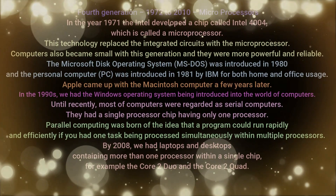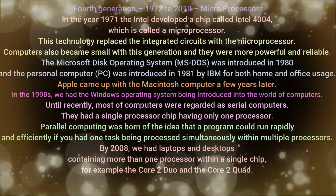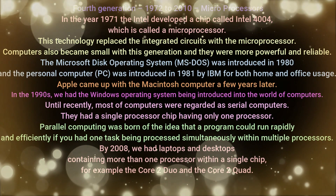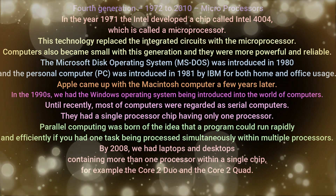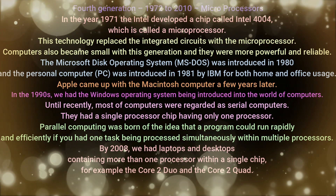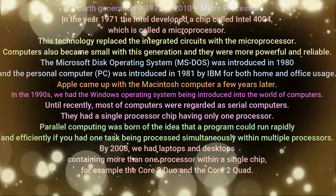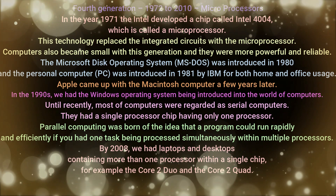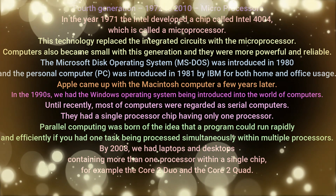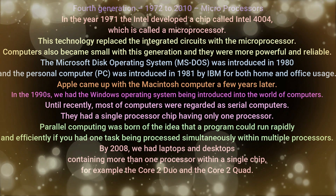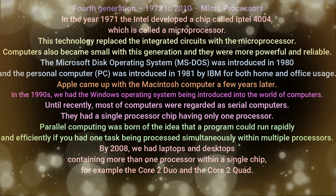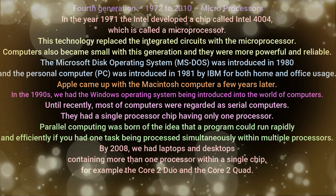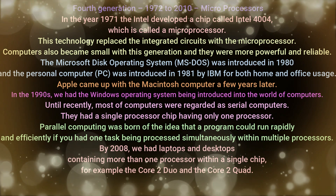Fourth generation: In the year 1971, Intel developed a chip called the Intel 4004, which is called a microprocessor. This technology replaced the integrated circuits with microprocessors. Computers also became smaller with this generation and were more powerful and reliable.